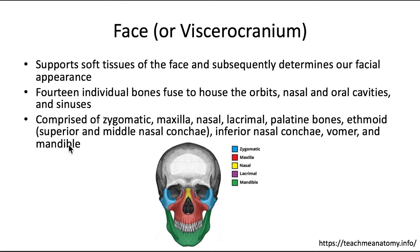The viscerocranium is comprised of the zygomatic, maxilla, nasal, lacrimal, palatine bones, the ethmoid bone which also includes the superior and middle nasal conchae, the inferior nasal conchae, the vomer, and the mandible. So a lot of bones going into supporting our face.